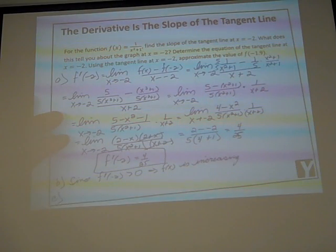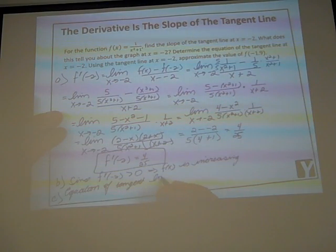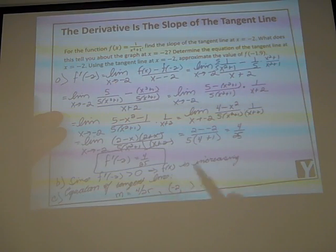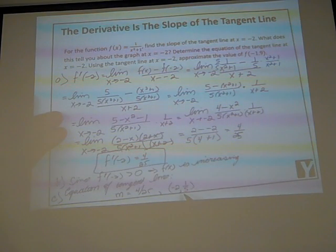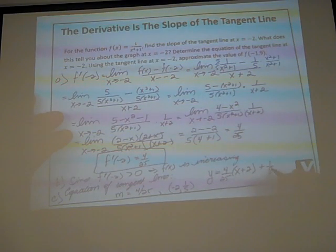Another follow-up question: determine the equation of the tangent line at x = −2. To find the equation of a tangent line we need two things — the slope and a point. We already know the slope is 4/25. For the y-coordinate of the point we go back to the original function and plug in x = −2, getting y = 1/5. Using point-slope form: y = (4/25)(x + 2) + 1/5.